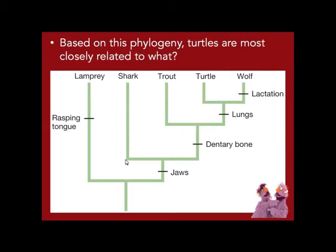Based on this phylogeny, turtles are most closely related to wolves — which seems silly because turtles and wolves are not at all alike — but on this tree, they're more closely related to each other than anybody else.